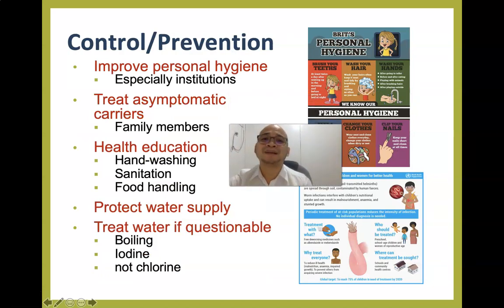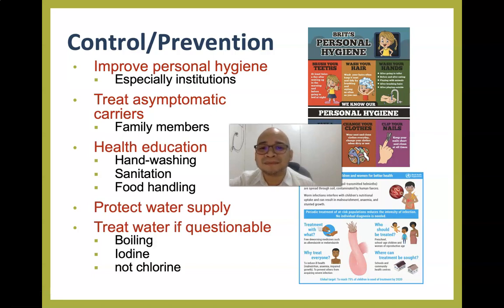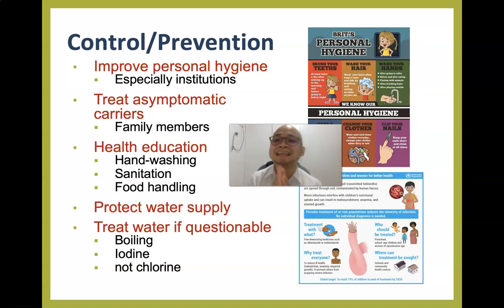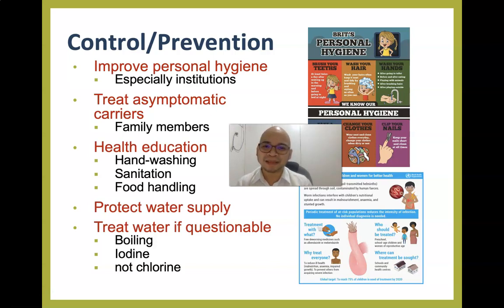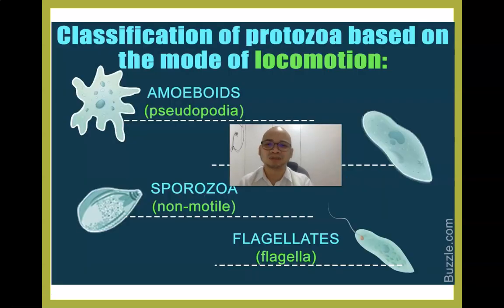To control or prevent the spread of intestinal protozoans, it is important to observe personal hygiene, treat asymptomatic carriers especially among family members, provide health education, practice proper handwashing, ensure sanitation and safe food handling, and protect water supply. If the water source is questionable, it is very important to boil water at 100 degrees centigrade for 15 minutes. Iodine treatment may also be provided, but chlorination alone may not prevent the spread of intestinal protozoans.